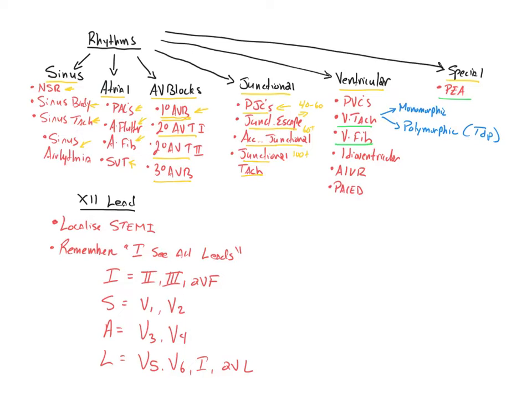Moving on to our ventricular dysrhythmias, you're going to have PVCs, or premature ventricular complexes. And just like all the other premature complexes, the PACs, PJCs, PVCs are going to be associated with an underlying rhythm. Sinus rhythm with PVCs, for example, or sinus tachycardia with PVCs.